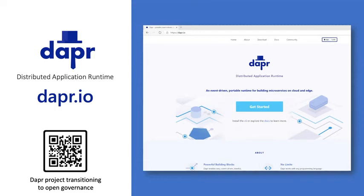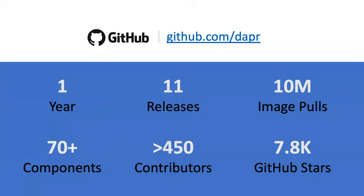A little overview of where we are with Dapr today: it was October 2019 when we announced Dapr, so less than a year ago, and we've had 11 releases. There's a decent number of image pulls that signals real-life usage — people are actually using this in real life. We have 70+ different components covering pretty much the entire CNCF data and messaging spectrum, and a growing number of contributors which validates the sense of a broad community and helps drive the direction of the project as consensus of the overall community.